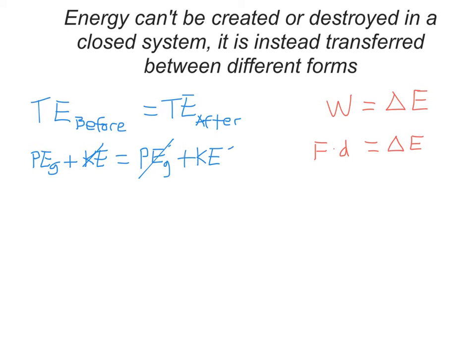So if we substitute in force times displacement for work, now we have a different way of writing the equation. We could also substitute in, for change in energy, gravitational potential energy. We could substitute in kinetic energy. We could substitute in elastic potential energy. Really, anything we want. In addition, we could also put in Ma for force. So this equation could take many different forms, depending on the situation.